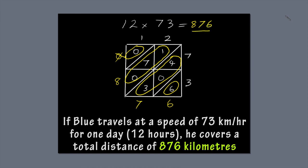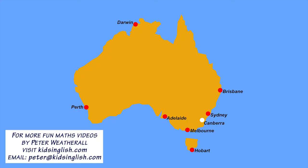So, if Blue travels at 73 kilometres an hour for one day, he covers a total distance of 876 kilometres. That's almost the distance between Melbourne and Sydney. Now, that's a long trip, isn't it?